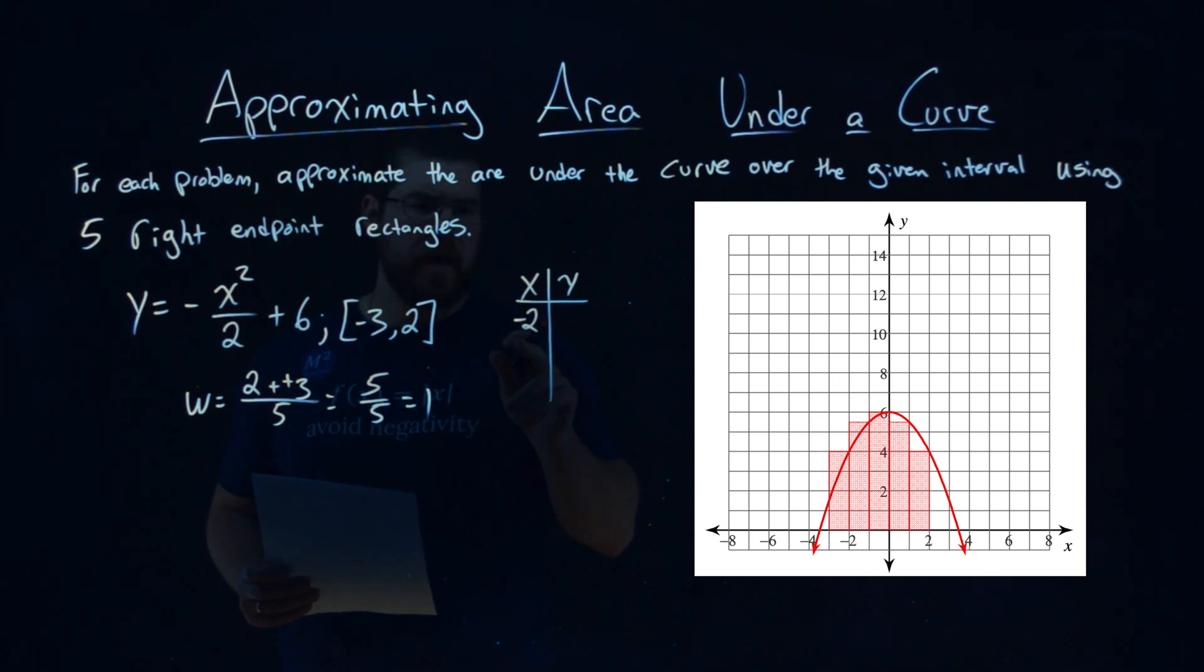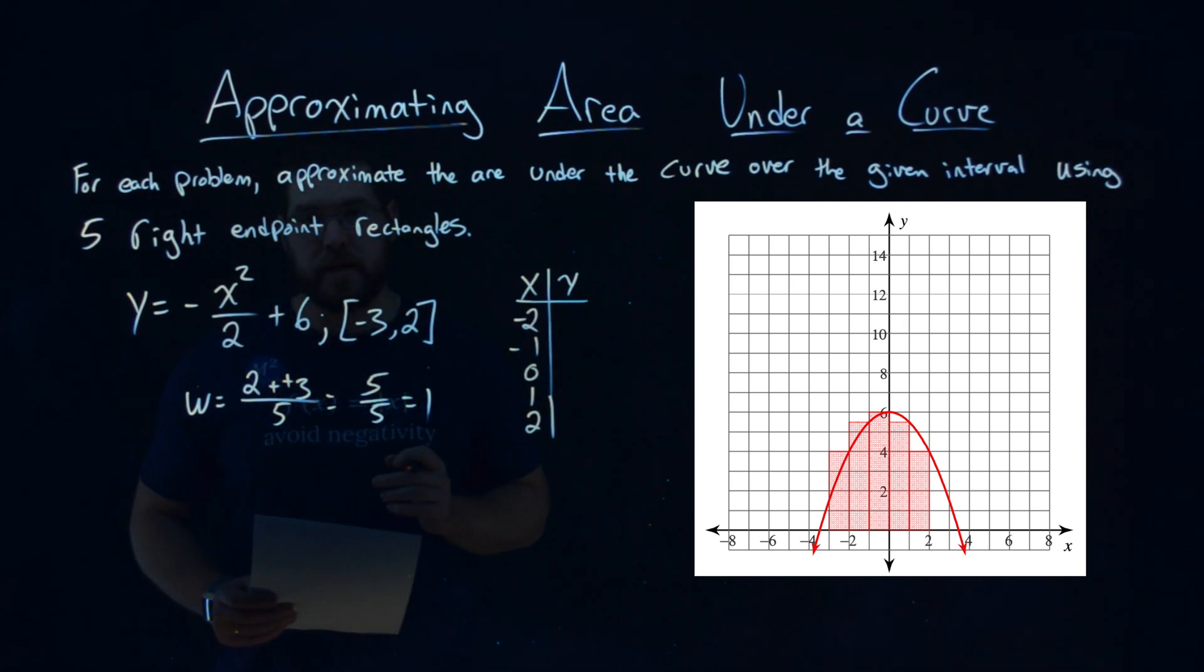And I keep adding the width, 1, from there. Negative 2 plus 1 is negative 1, plus 1 is 0, plus 1 is 1, plus 1 is 2. Notice here we should have five numbers representing each one of the five rectangles.